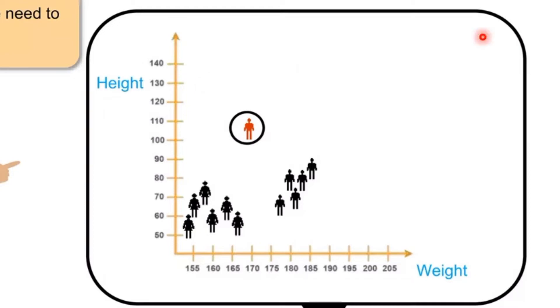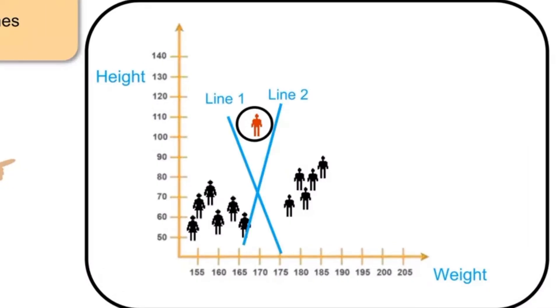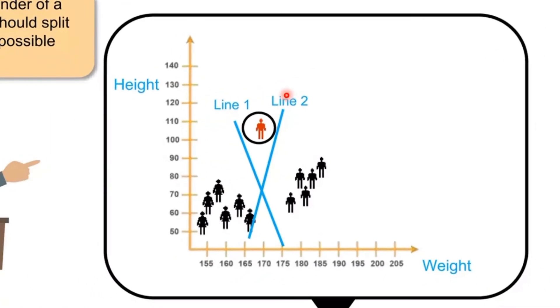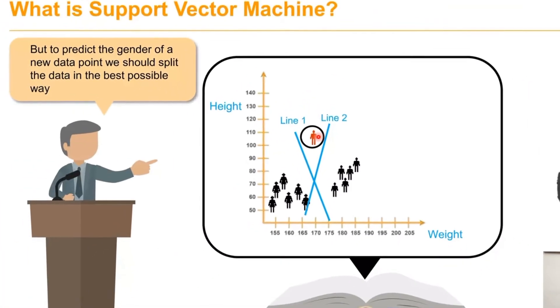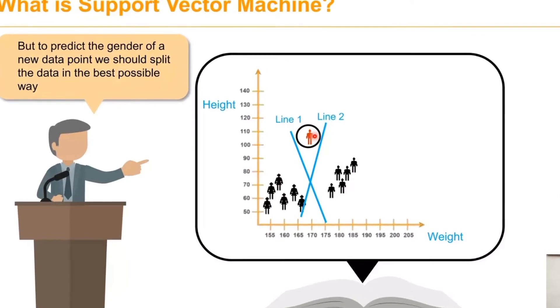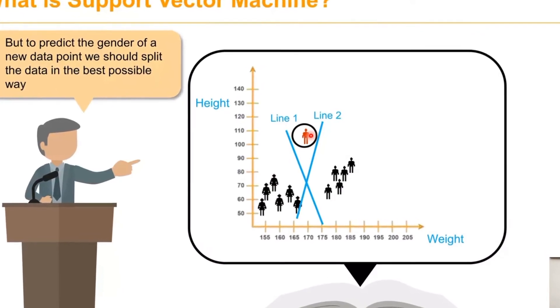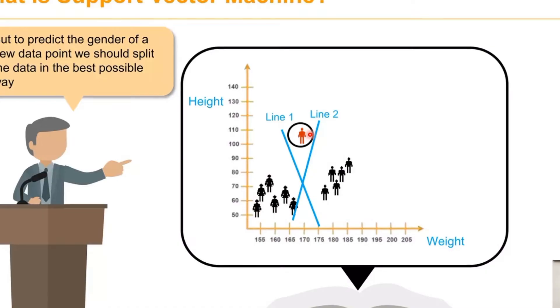For this task, first we need to split our data. To predict the gender of the new point, we have to split the data in the best possible way to find with more accuracy.